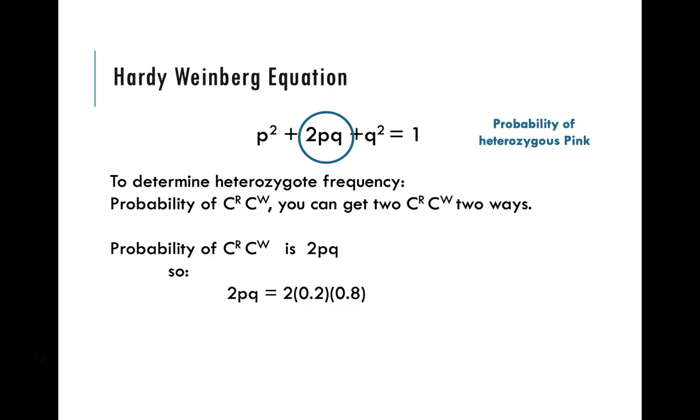So probability of being heterozygous is 2 times p times q, which is equal to 0.32. So we have now calculated the probability of being a homozygous red, heterozygous, or homozygous white individual. That's really what this equation is most often used for, is calculating the frequency of genotypes in a population.